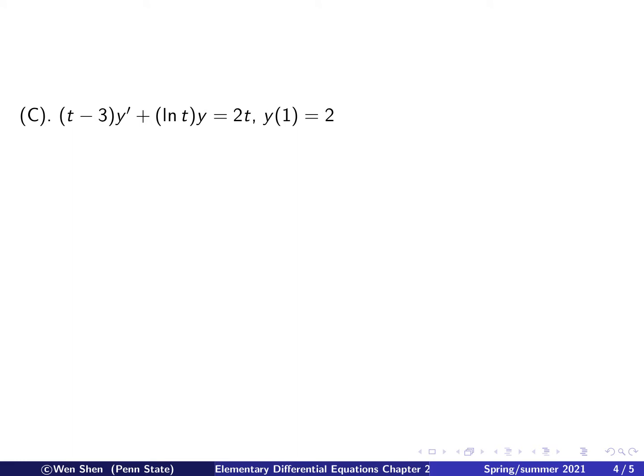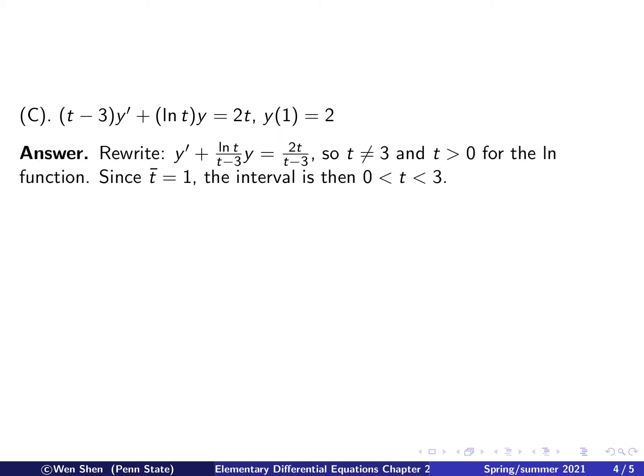The next is this equation. The new thing here is it involves a function which has restrictions on its domain, and t bar is 1. We need to rewrite the equation into the standard form by dividing both sides with t minus 3, and then we get this. So this is our function p(t), and this is our function g(t). Let's look at for what values are these two functions defined and are continuous.